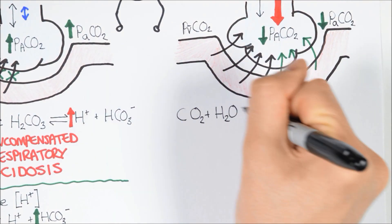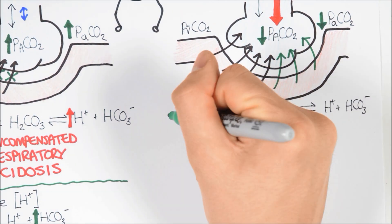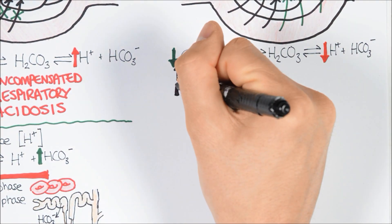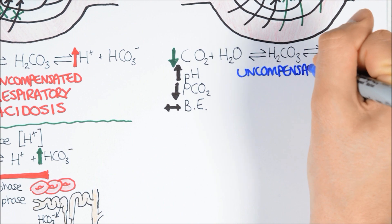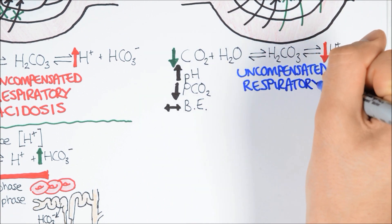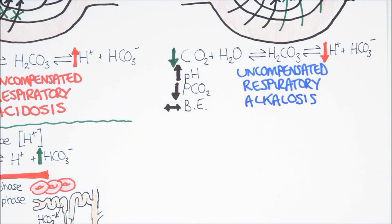We can see that this will promote the leftward shift of the carbonic acid equation, which will cause more protons to be lost from solution, thereby increasing the pH matched to the decreased arterial PCO2 and a proportionately normal base excess. This can be classified as an uncompensated respiratory alkalosis.